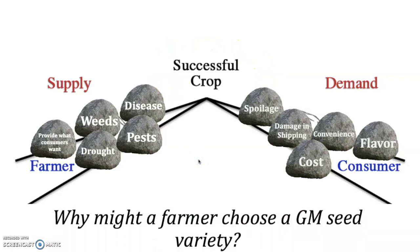To go back to our original question — why might a farmer choose a genetically modified seed variety? The answer is to overcome a challenge they face in providing the supply and meeting the demand of consumers for food. Perhaps it overcomes disease, perhaps it overcomes pests, perhaps it adds to convenience or flavor. That's the reason, or culmination of reasons, why they might choose a genetically modified seed variety.